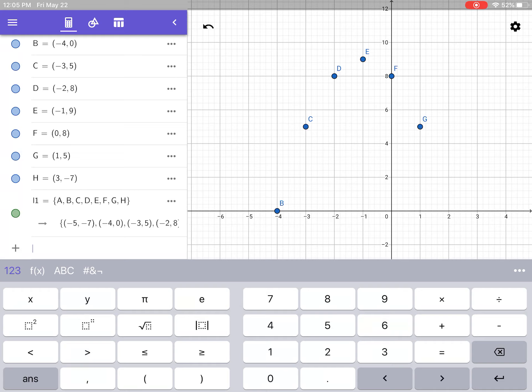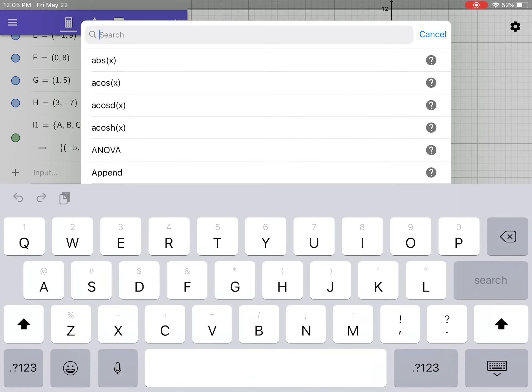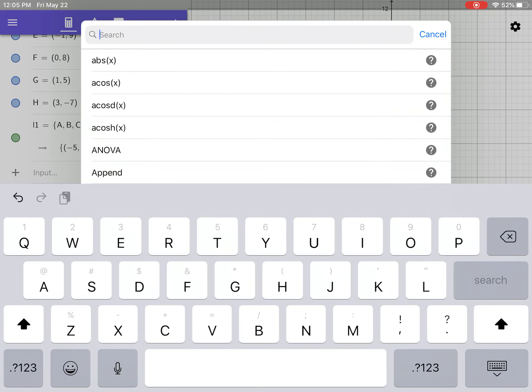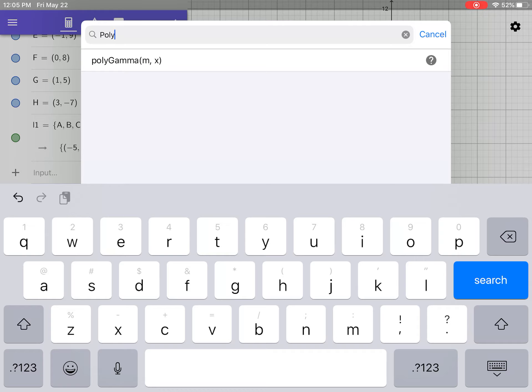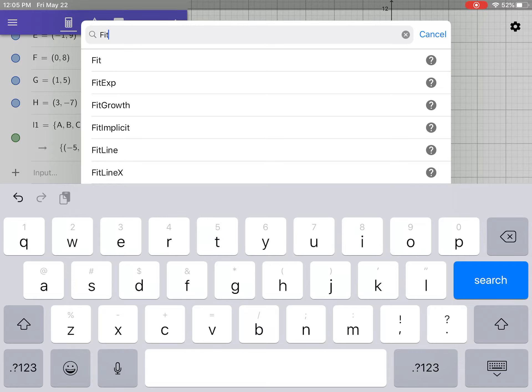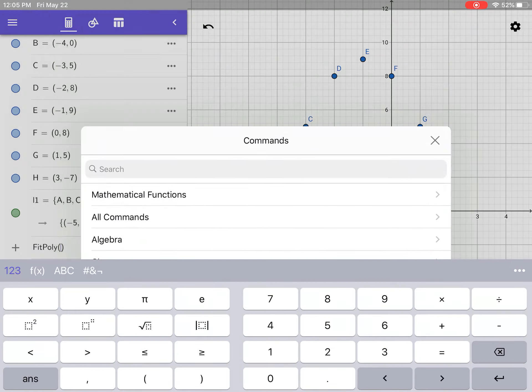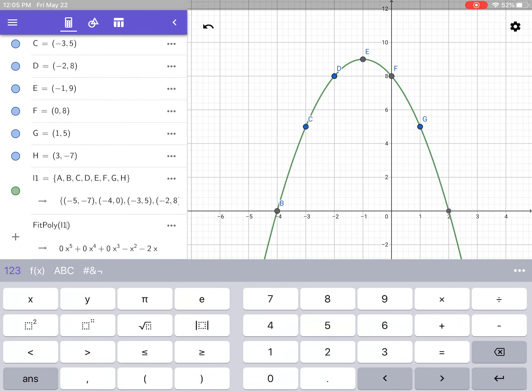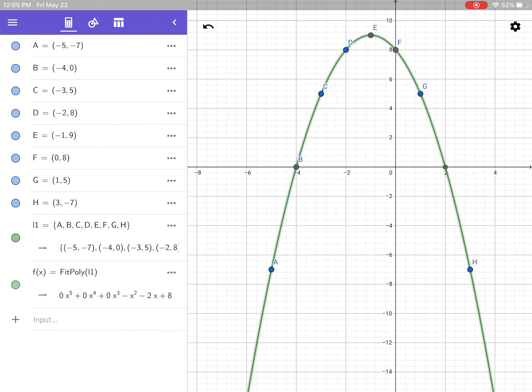I have all the points in a list. I want to create an equation now. Go to the next line. Don't delete anything; if you clear anything, you're not going to have your list anymore. Go to the gray dot dot dot in the right hand corner and start to type in... Oh sorry, I have it backwards. Fit poly. I type in L1.